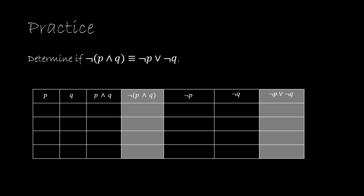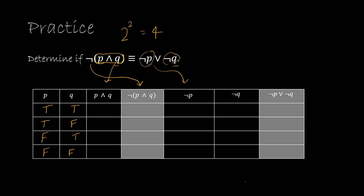Here's one more practice for us to try together. I've set this up already, but it's important you know how: two propositions P and Q, so 2 squared gives four rows. I need columns for P AND Q as my first compound proposition, and then NOT P, NOT Q, and NOT P OR NOT Q as my second. The final gray columns are the complete compound propositions we'll be comparing.